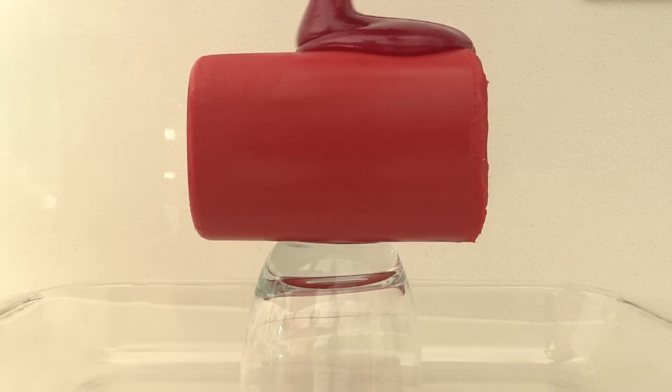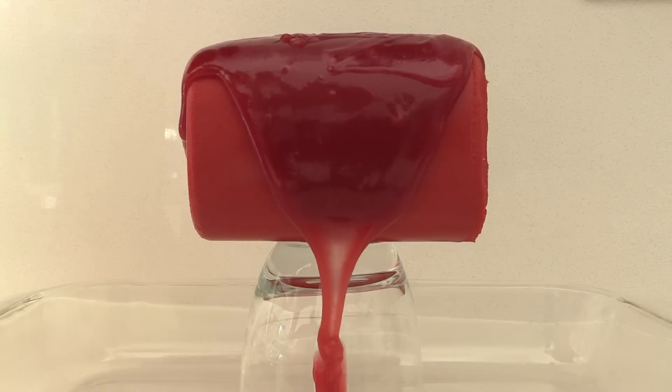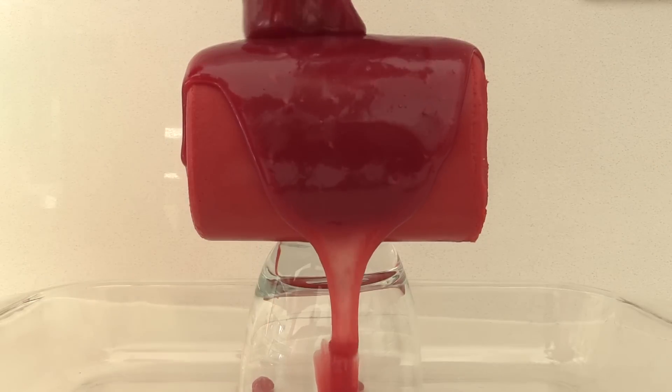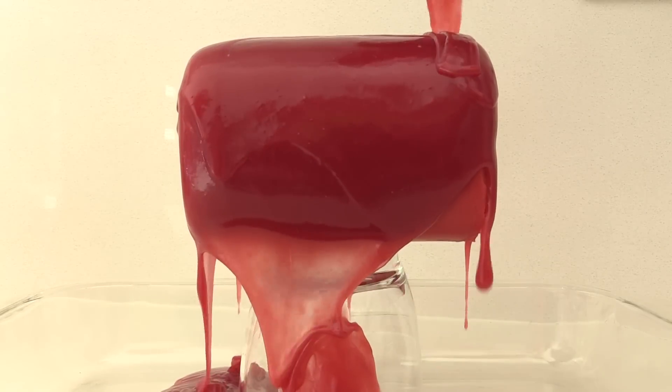Spoon generous amounts of the glaze over the top and let it all drip down on all the sides. Anything that drips down into the container can be used again. You can just scoop it up and store it in a zip lock bag in the freezer until you need it.